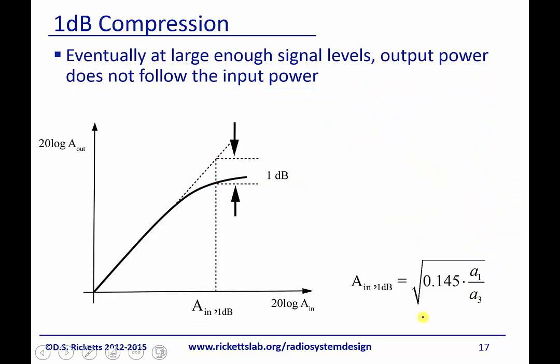And if you do the math, you can calculate it out and it turns out that the amplitude input for 1 dB compression is the square root of 0.145 times alpha_1 over alpha_3. And that'll be an easy way for you to calculate this in your homeworks and in your future life as RF designers.